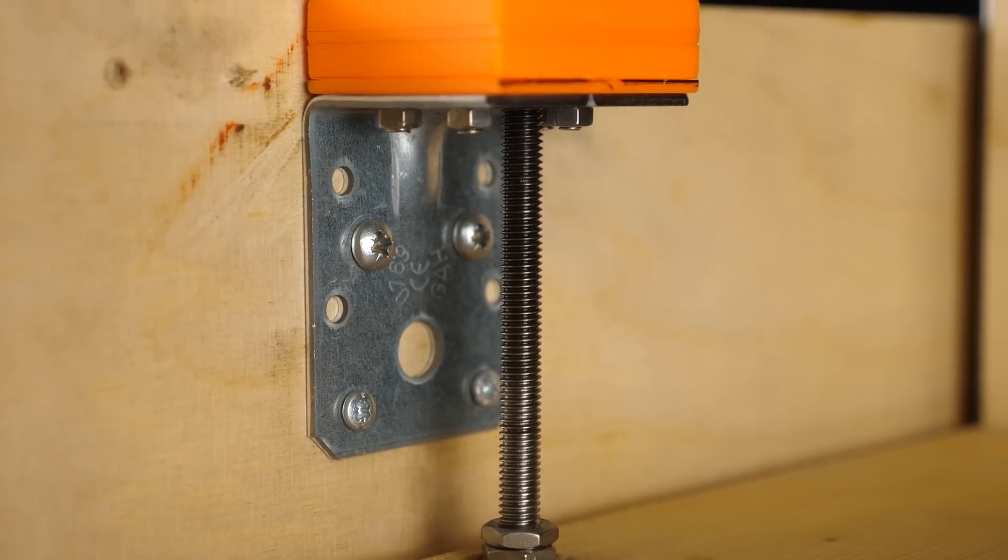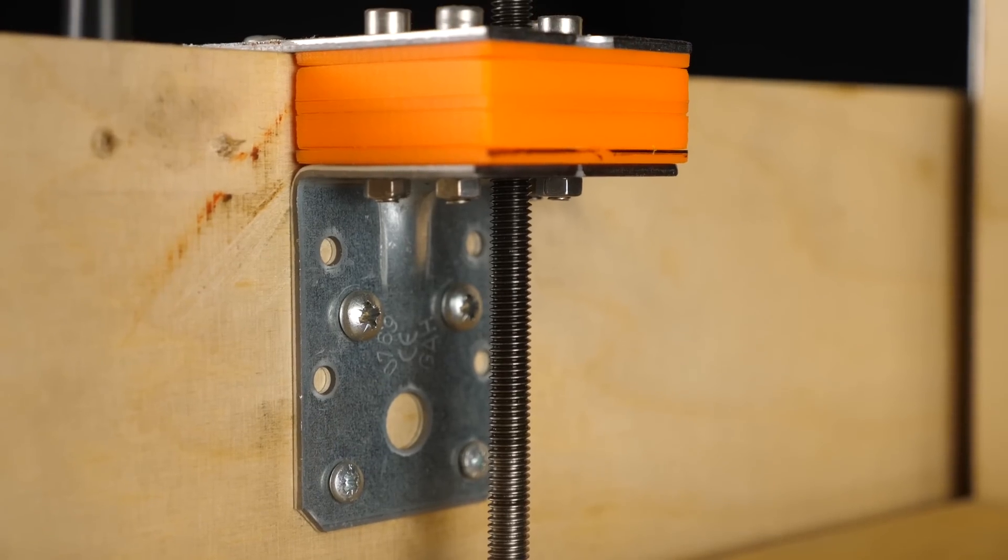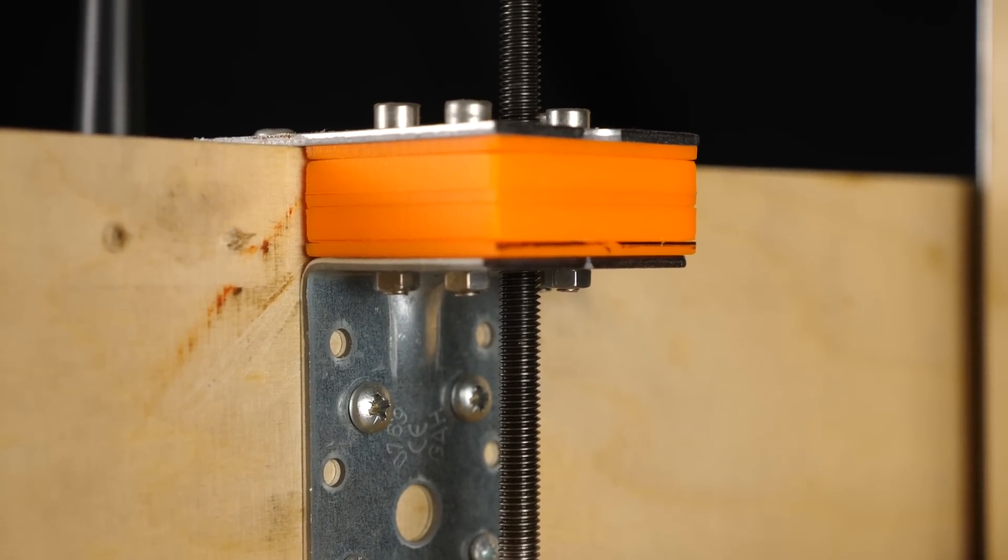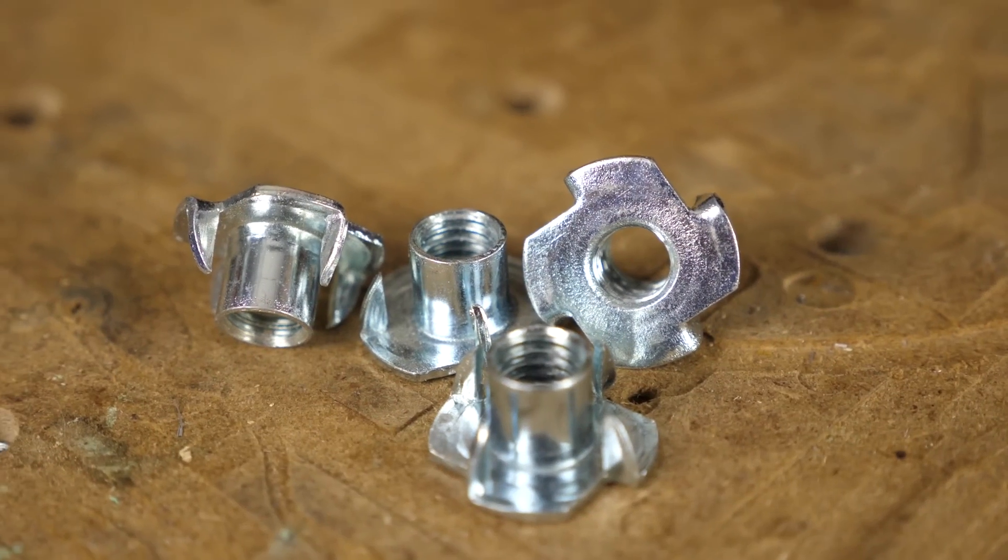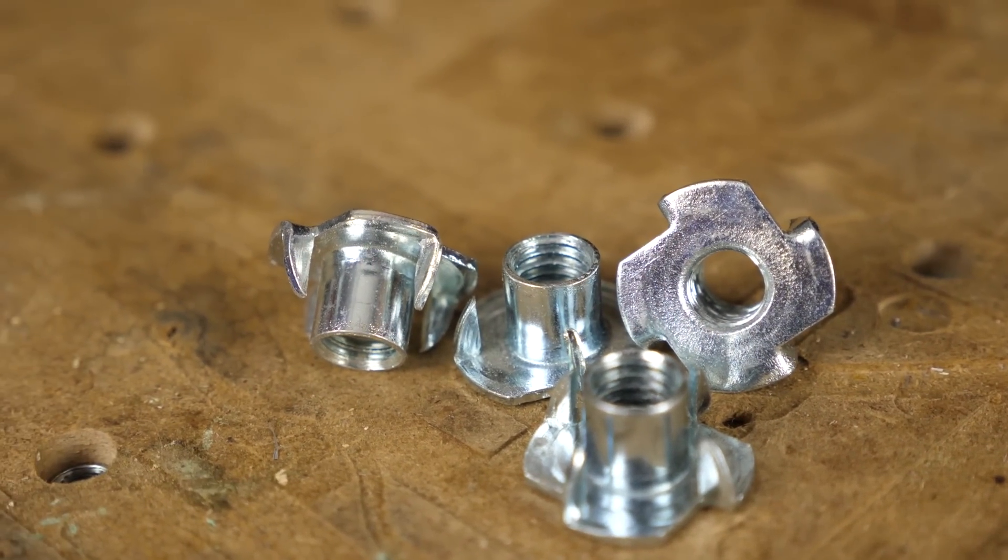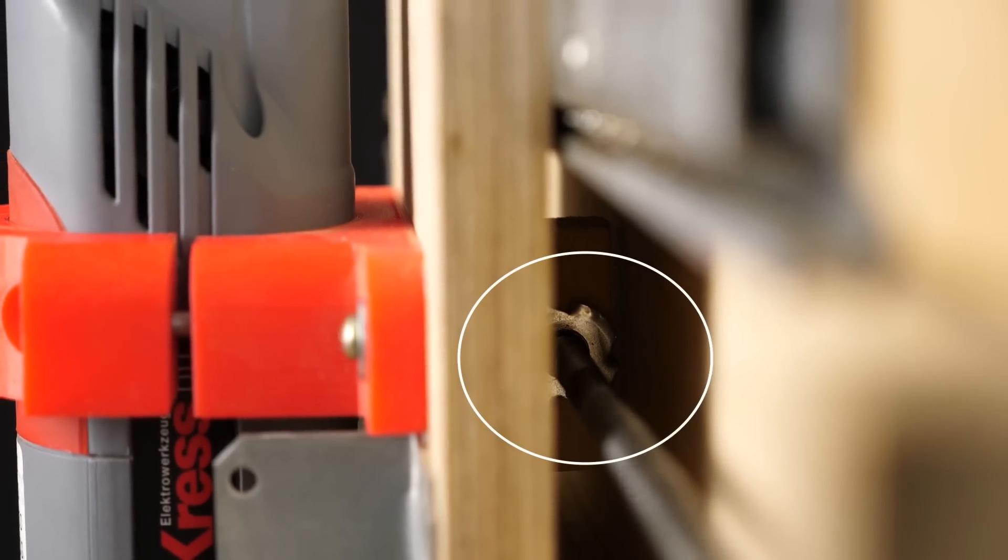I later upgraded the lead screw nut bearing blocks to 3D printed ones but in the beginning I simply used a piece of wood with a hole in the middle in which I mounted drive nuts. My X axis is still working like that with only little play.